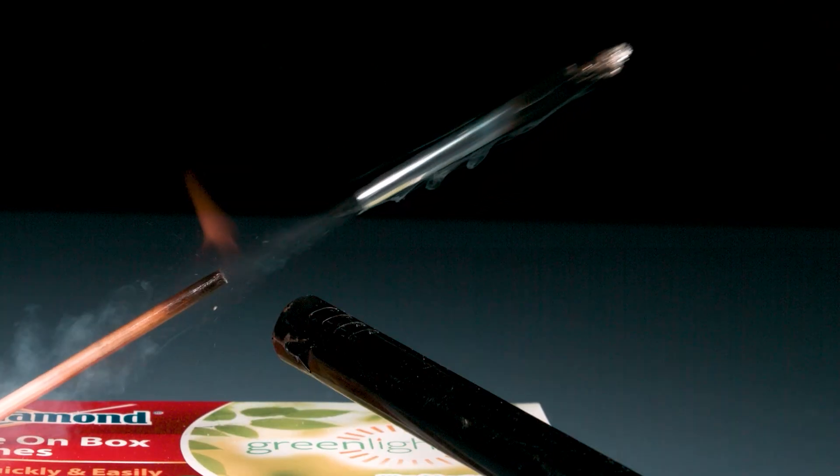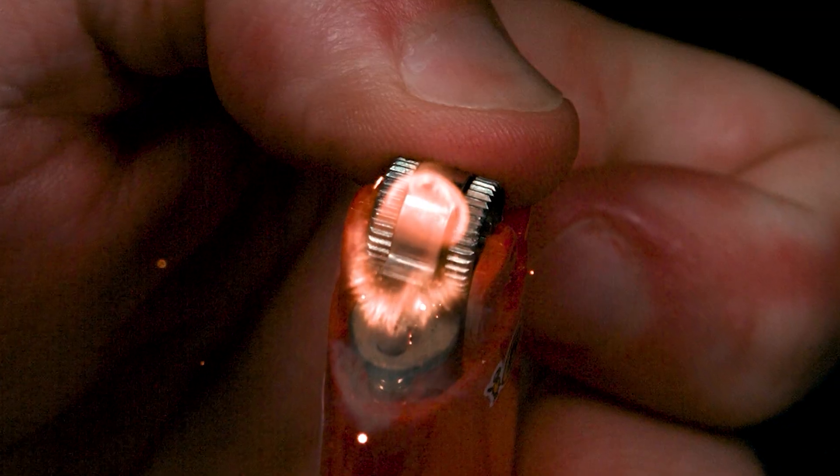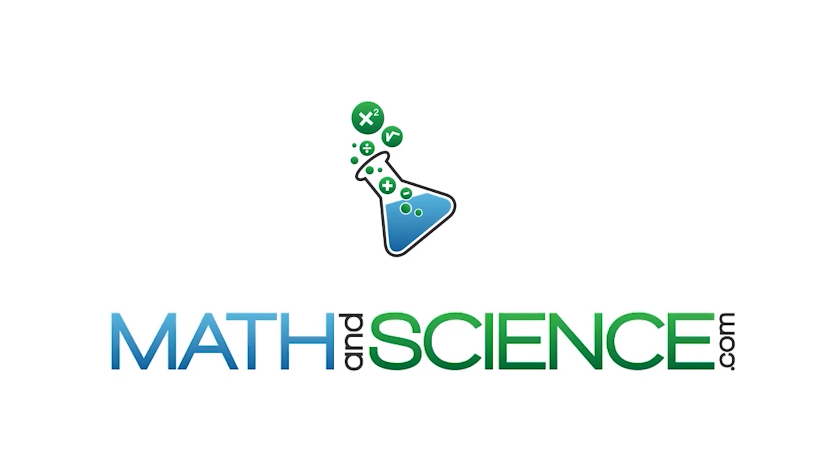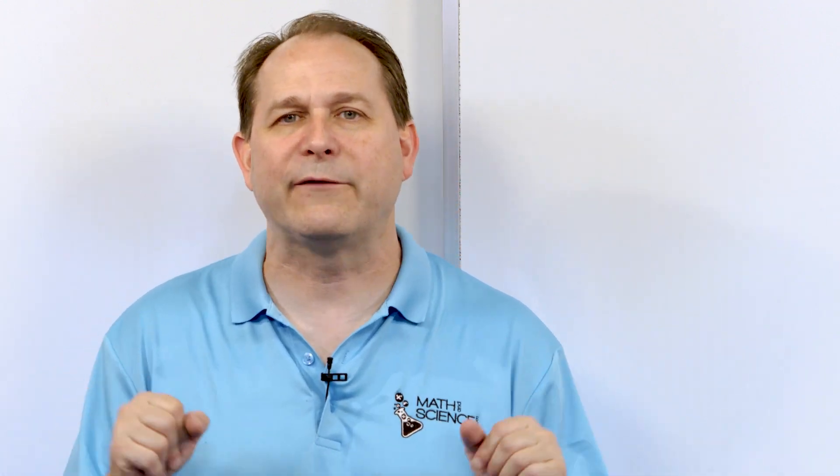We've all seen the iron filings that you can sprinkle on top of magnetic fields and see the beautiful patterns. What I would like to do is suspend a magnet in three-dimensional space with a string, then literally get my hands and throw the iron filings in the air so they float up and crisscross over the magnet. Then I would like to film that in slow motion and see what the iron filings do when they get in proximity of the magnetic field. I think it would be really cool, and that's what we're going to try to do today.